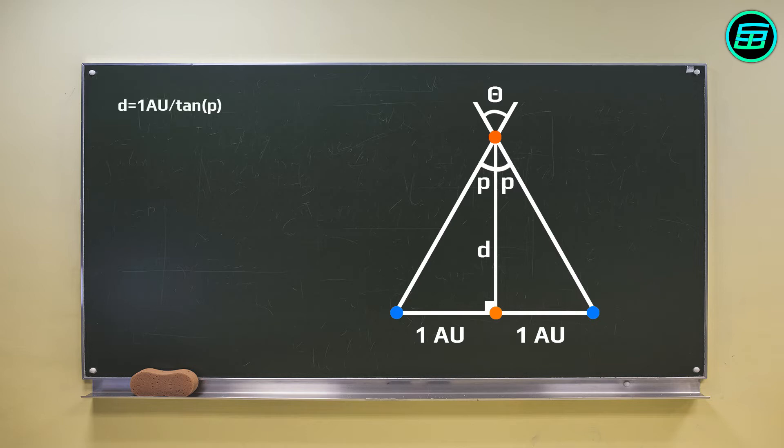If we consider the parallax angle in radians, we don't need to calculate the tangent of the parallax angle, since the tangent of a very small angle in radians is almost equal to the angle. So the formula becomes simpler: d equals one AU over the parallax angle in radians.